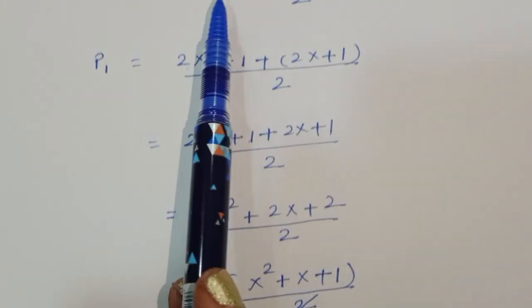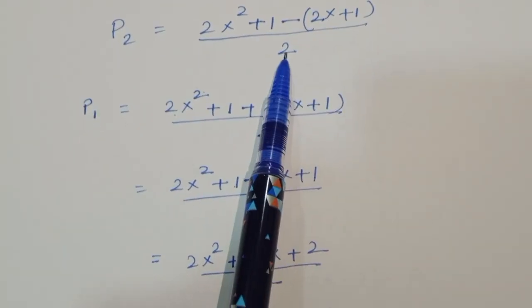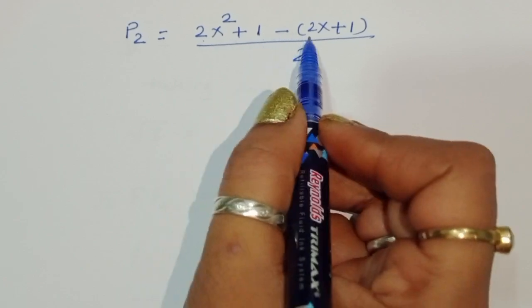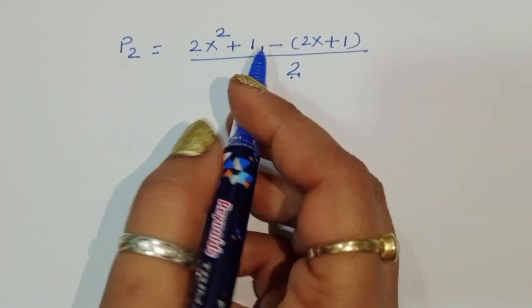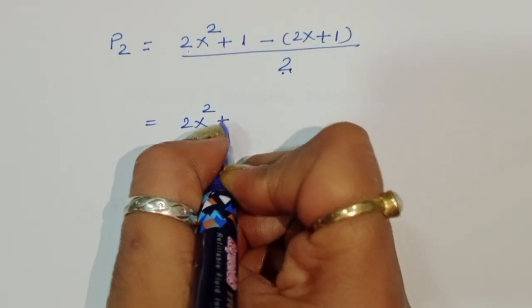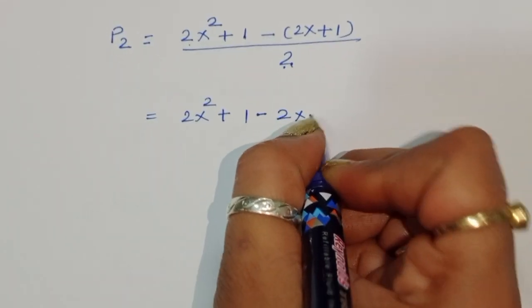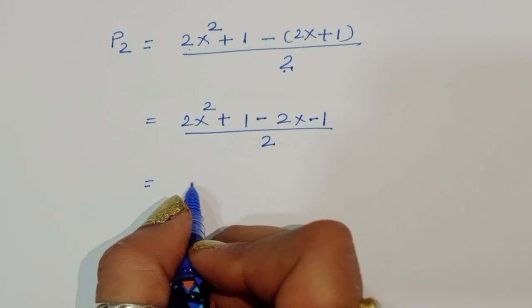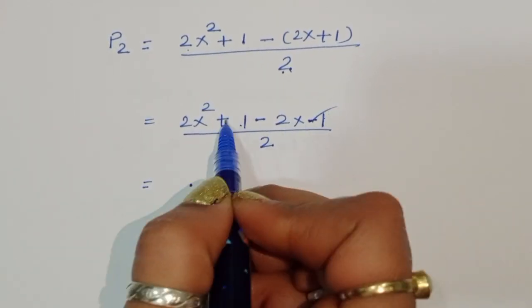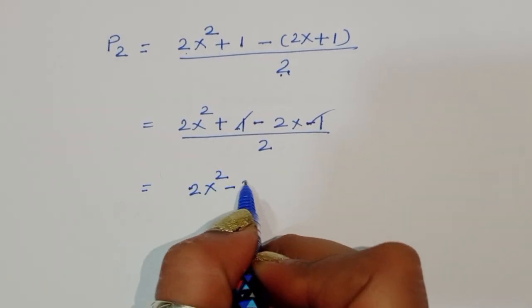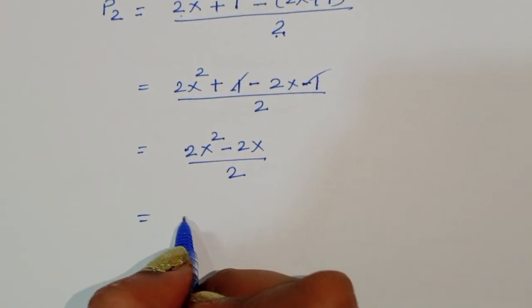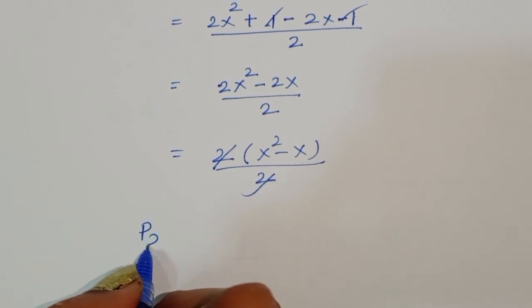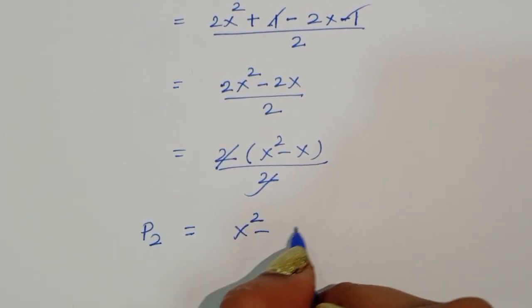For p₂: p₂ = (2x² + 1 - (2x + 1)) / 2 = (2x² + 1 - 2x - 1) / 2 = 2x² - 2x / 2. Taking out factor of 2: p₂ = x² - x.